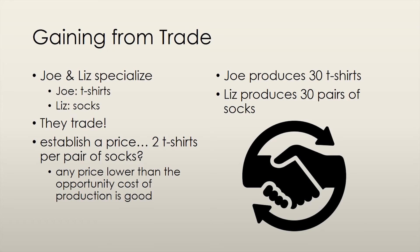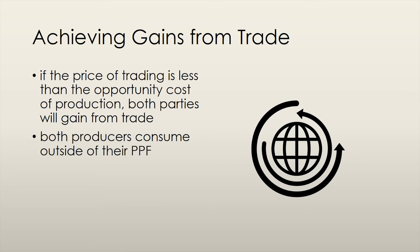For Joe, this is a good deal because if he were to produce socks by himself, it would cost him 5 t-shirts per pair. Now he only has to pay Liz 2 t-shirts per pair of socks. This is also a good deal for Liz, because if she were to produce t-shirts herself, it would cost her a full pair of socks per t-shirt. By trading with Joe, she only needs to pay half a pair of socks to buy a t-shirt. As a general rule, if the trading price of the goods is less than the opportunity cost of production, then both producers will gain from trade.